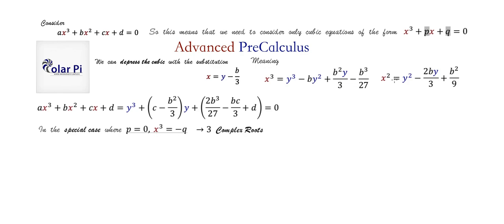An example where p = 0 is x³ + 1. We can factor this using sum of cubes as (x + 1)(x² - x + 1). The quadratic x² - x + 1 has two imaginary roots, and from x + 1 we get one real root, giving three roots total — all complex in the broader sense.